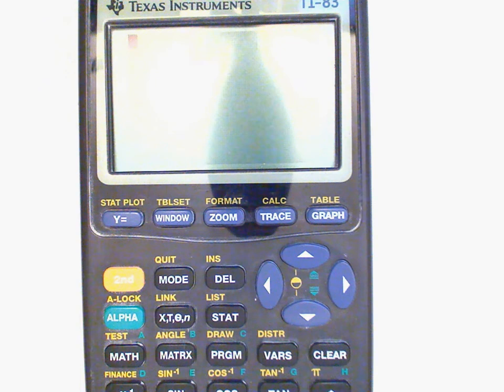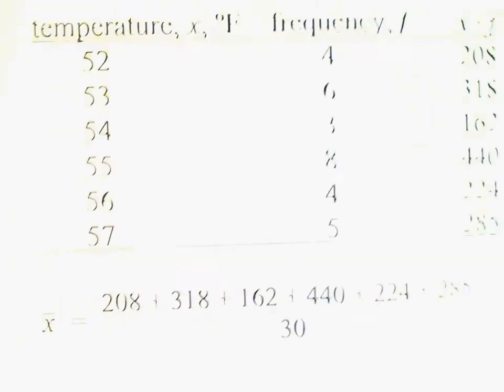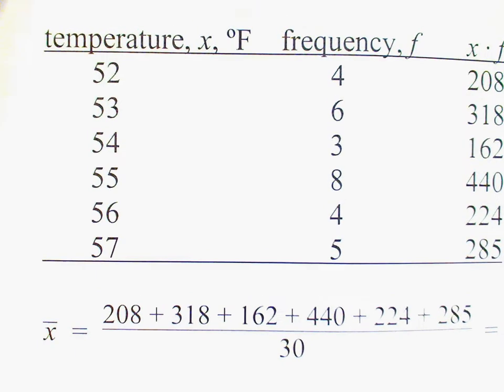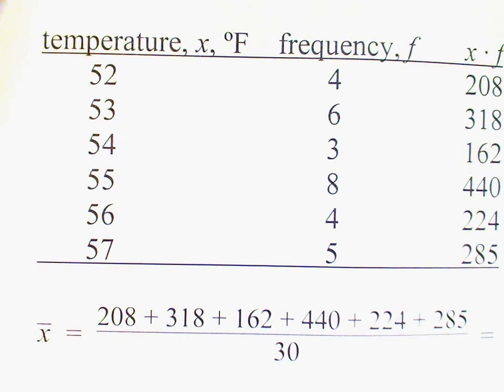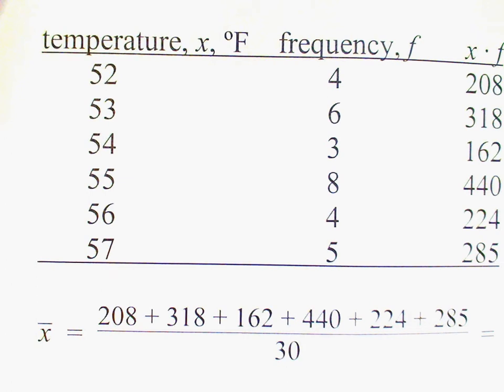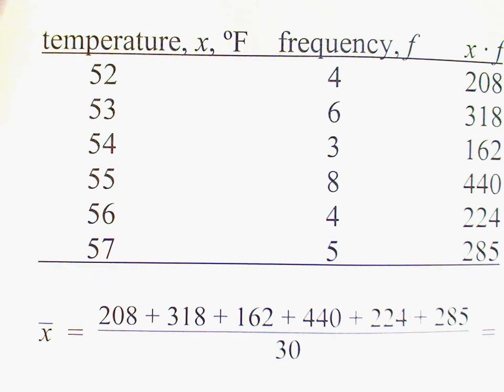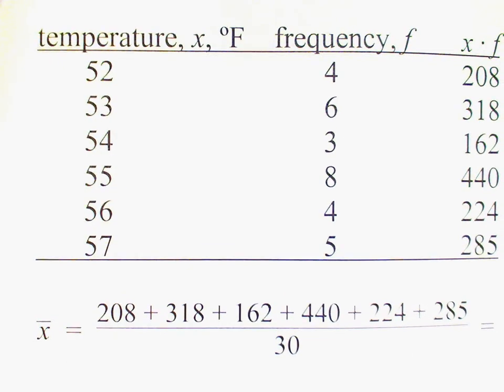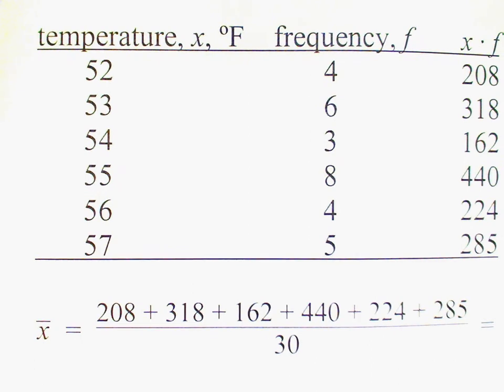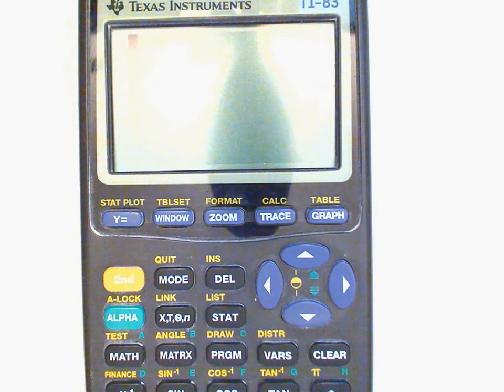I'd like to show you how to work the previous example using your graphing calculator. You remember in the previous example we had this frequency distribution here, and the problem was to calculate the mean. Now the shortcut method that we used would certainly be a lot easier than adding up 4 52's, 6 53's, and so on, and then dividing by 30. Even still, though, it's easier to use your calculator. So I want to show you how to do that right now.